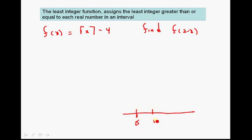Zero, one, two, three. And we'll plot our little point there, 2.3. It says assigns the least integer greater than or equal to each real number in the interval. Here's 2.3. It's in the interval. And it's greater than or equal to the real, to this. So, we're looking in this direction. We're going to 3 right here.